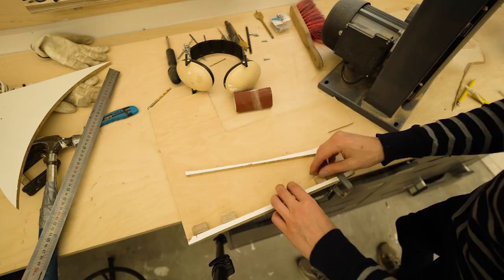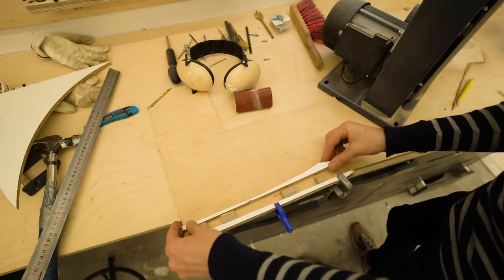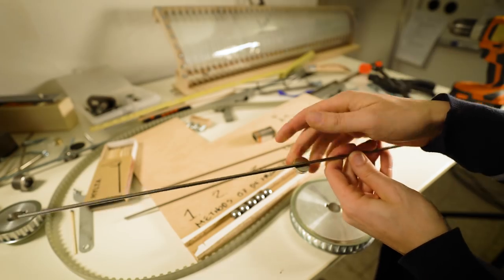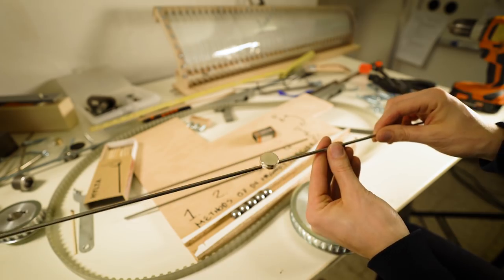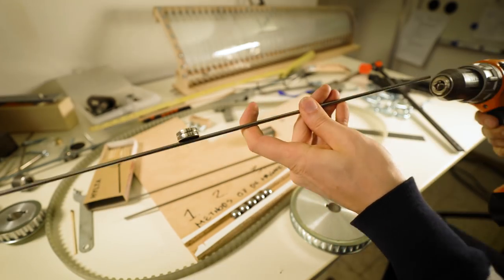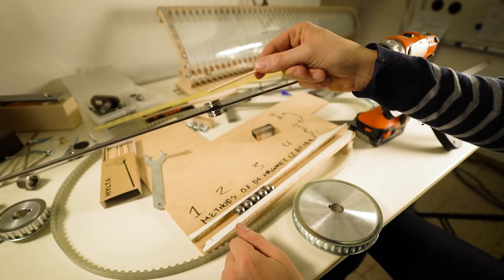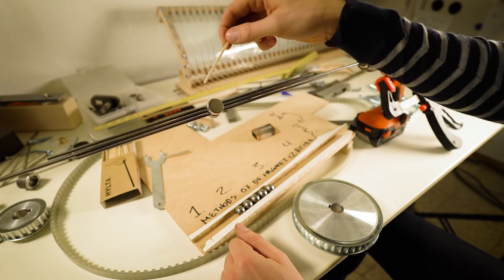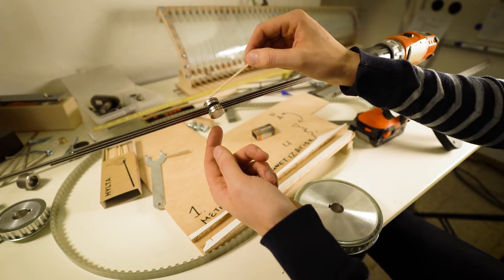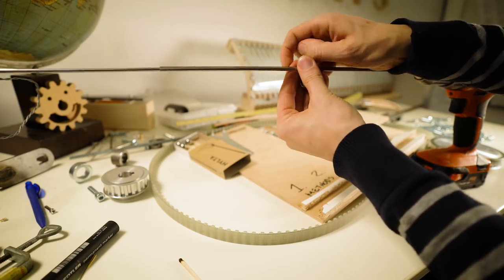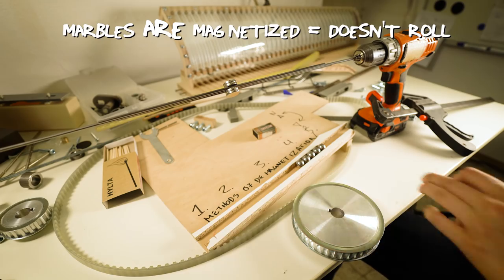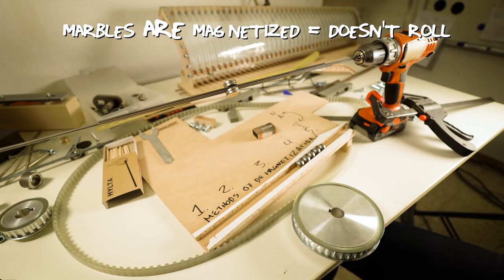To test this method, I started some experiments. I built this marble track which has a five degree slope. And I put these two disc magnets on a magnetic rod. By spinning these disc magnets around, you will have a magnetic field with alternating polarities. Then I took the marbles and I magnetized them. And as you can see, they don't roll on the five degree slope.